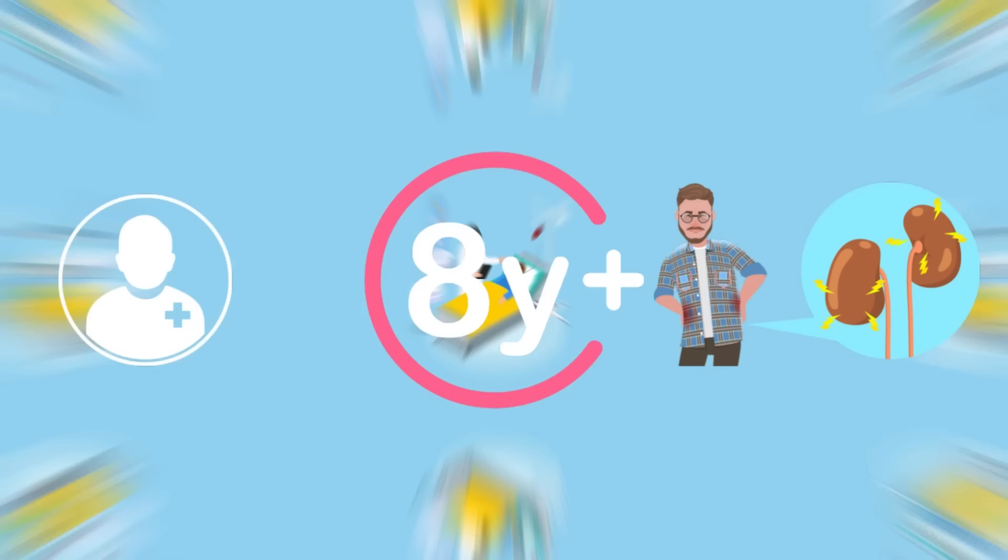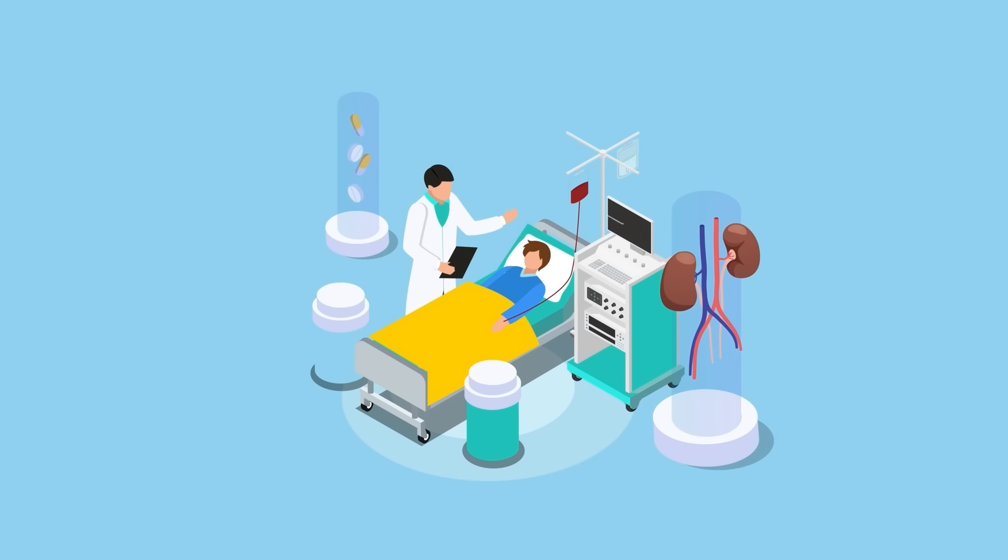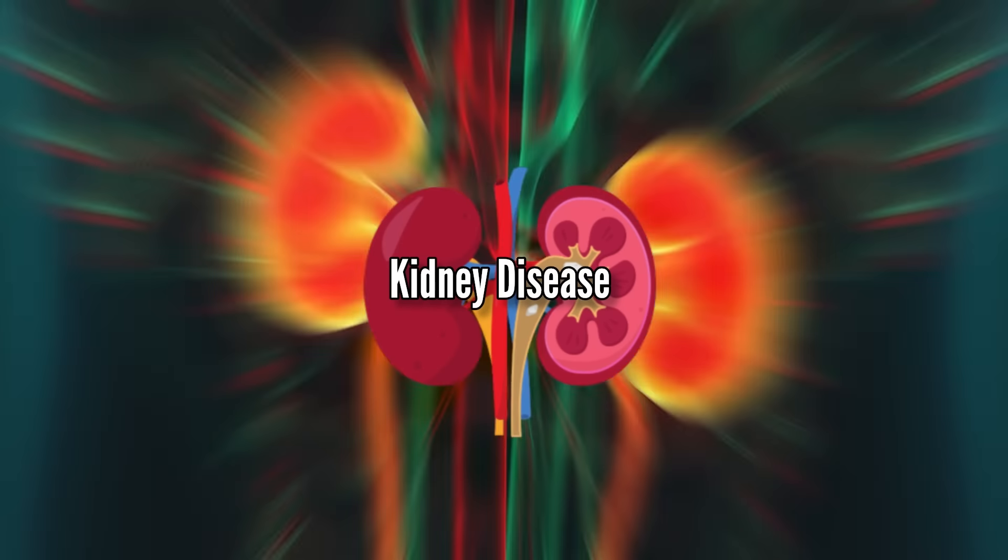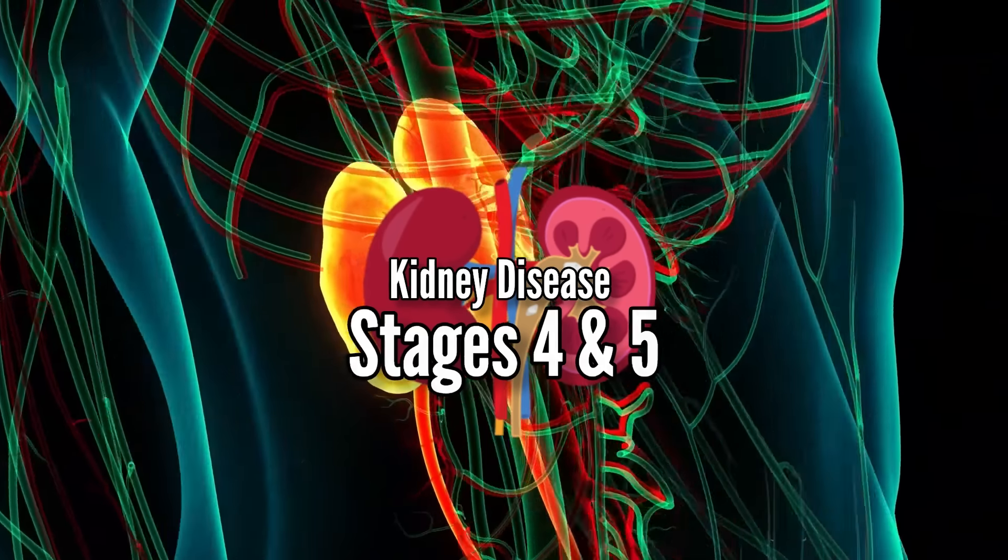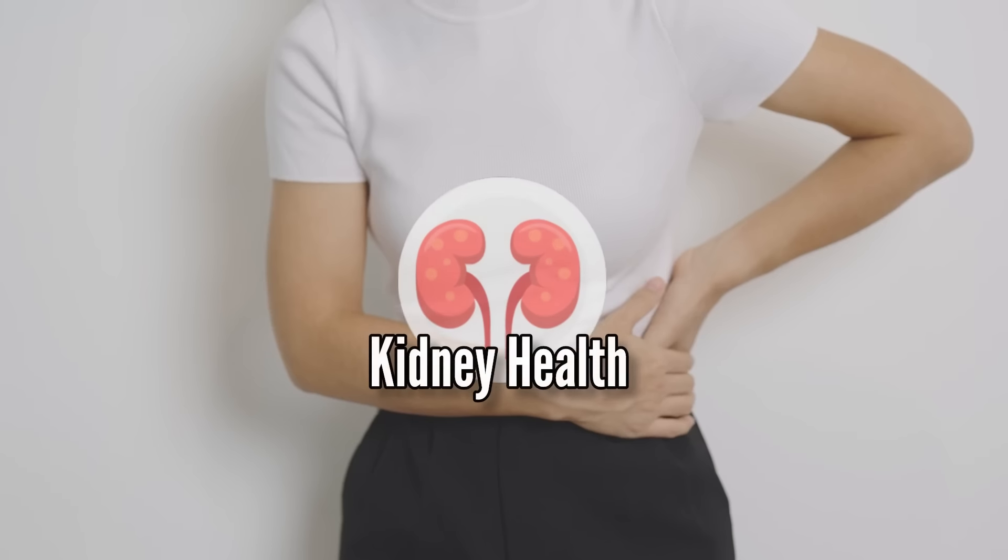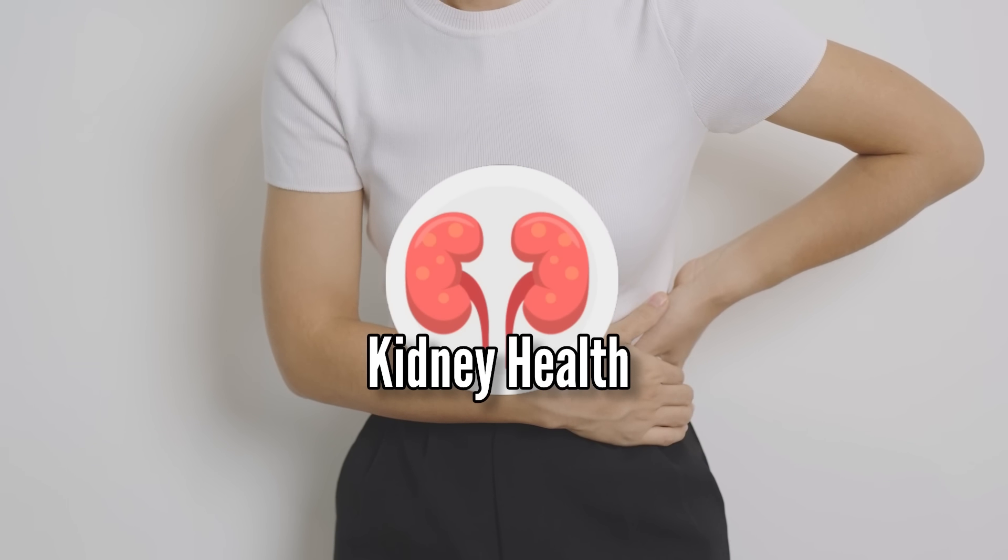And you may not believe it. Experts say that even people in the later stages of kidney disease, like stages 4 and 5, can get better if they do the right things. You can take control of your kidney health by following 5 important steps, which I am going to show you in today's video.